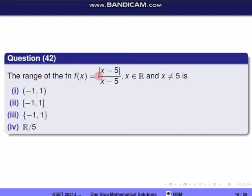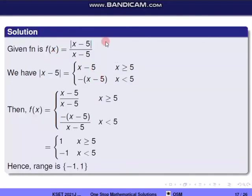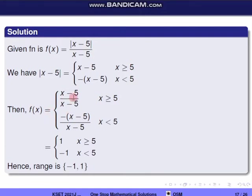We will evaluate f(x). First, the modulus |x−5|: for x greater than or equal to 5, it equals x−5; for x less than 5, it equals −(x−5). Substituting, f(x) = (x−5)/(x−5) for x ≥ 5, and f(x) = −(x−5)/(x−5) for x < 5.